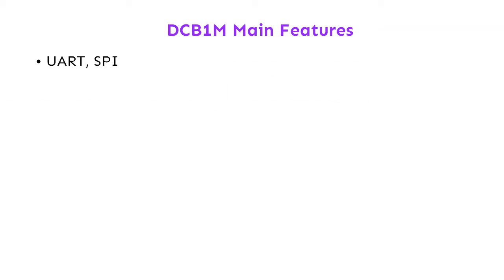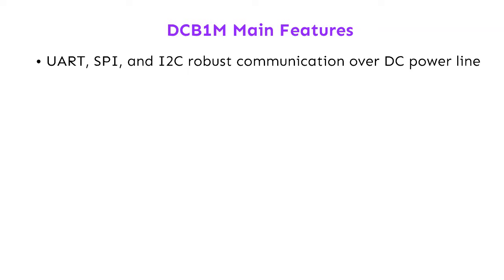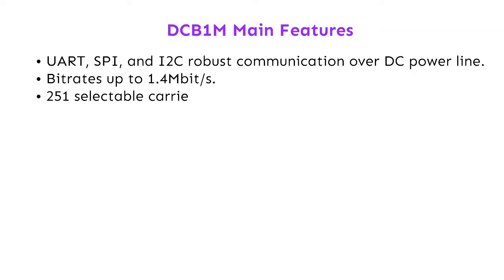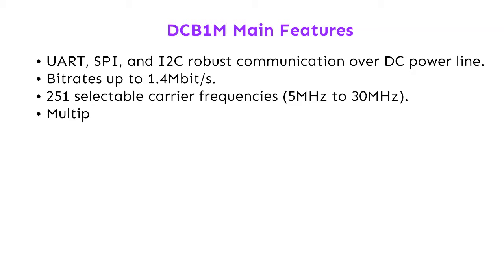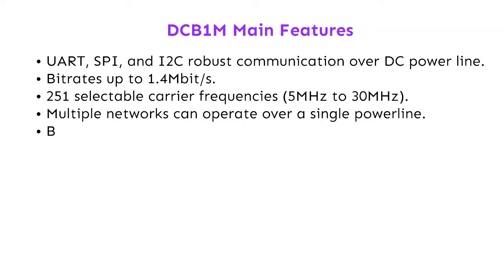Main features: UART, SPI, and I2C robust communication over DC powerline. Bitrates up to 1.4 megabits per second. 251 selectable carrier frequencies, 5 to 30 megahertz. Multiple networks can operate over a single powerline.